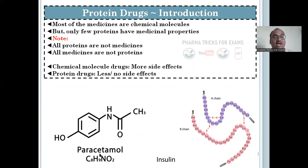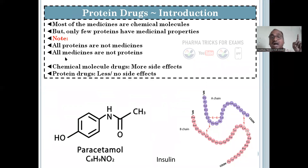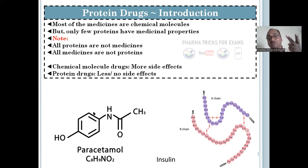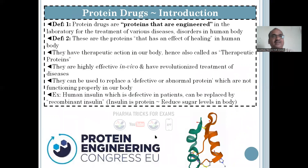Most medicines are chemical molecules like paracetamol and ibuprofen, but only a few proteins have medicinal properties — see insulin. You must note that all proteins are not medicines, and all medicines are not proteins — a very important point. Chemical molecule drugs have more side effects, but proteins have very less or no side effects.